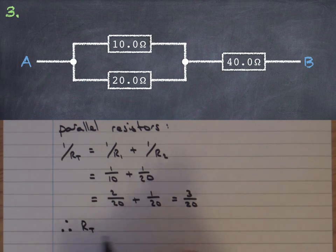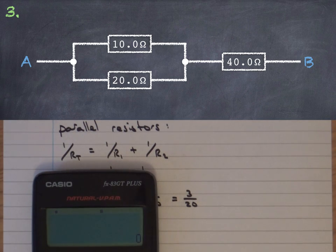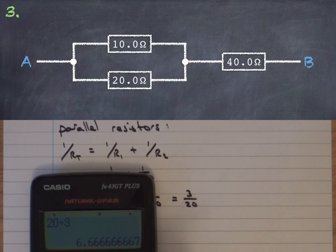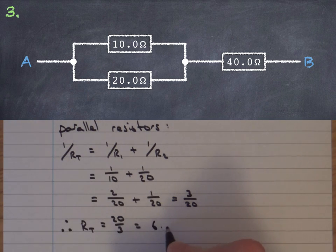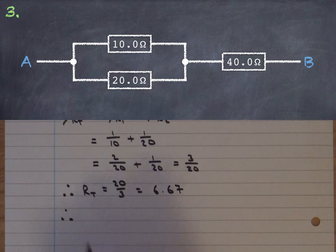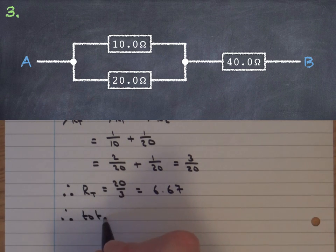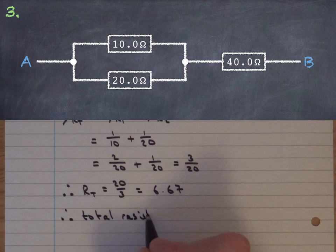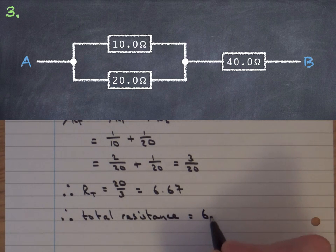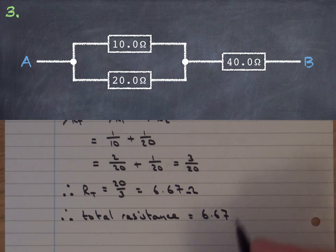So in order to find the effective resistance of those two parallel resistors RT I would flip this round and that would be 20 over 3 equals - and we'll find that with the calculator 20 divided by 3 I'll take 3 significant figures so 6.67 ohms but of course we still have that other resistor the series resistance of 40 ohms so the total resistance in the circuit would be the 6.67 ohms for the two in parallel plus the 40 which is in series with that.